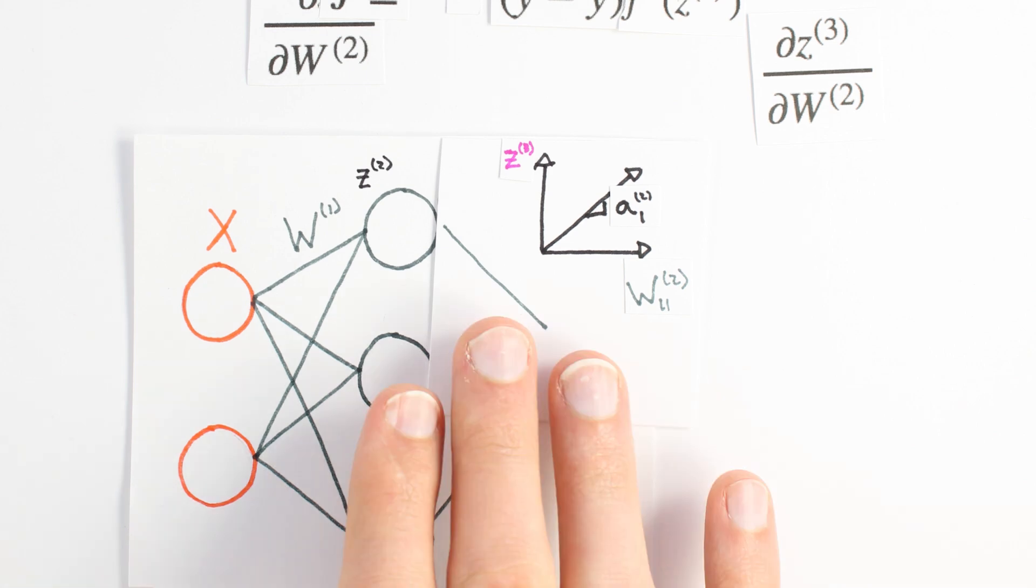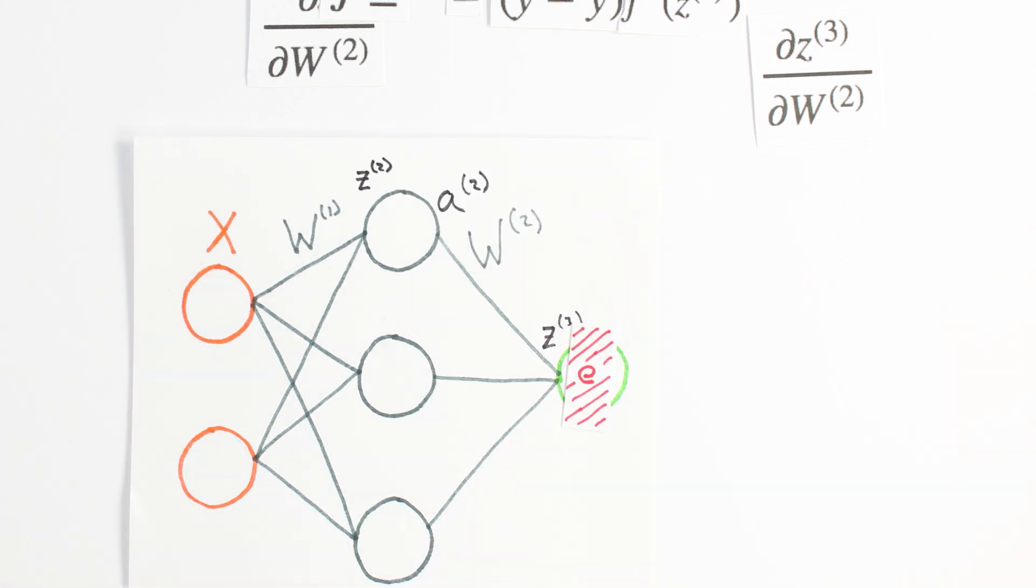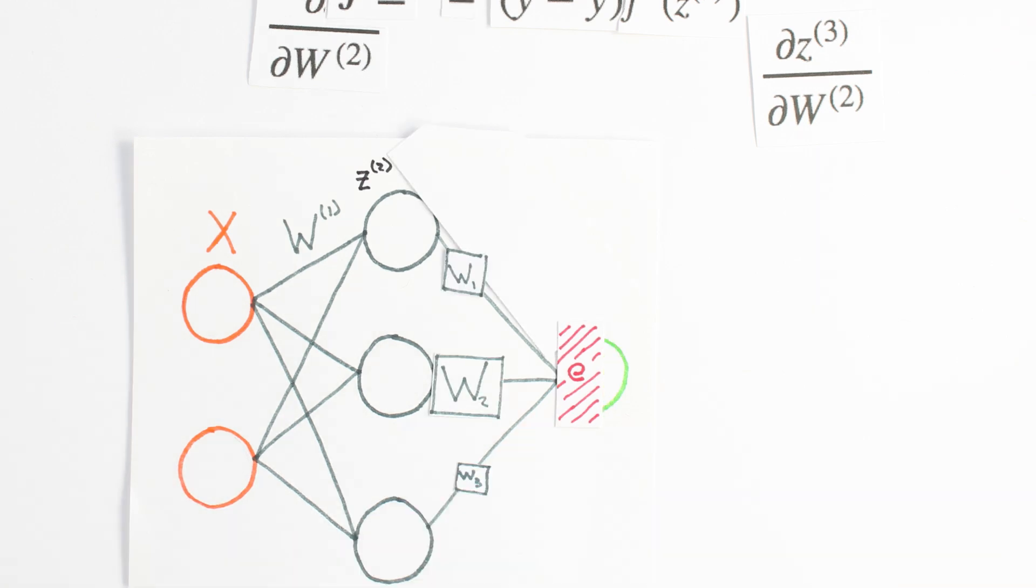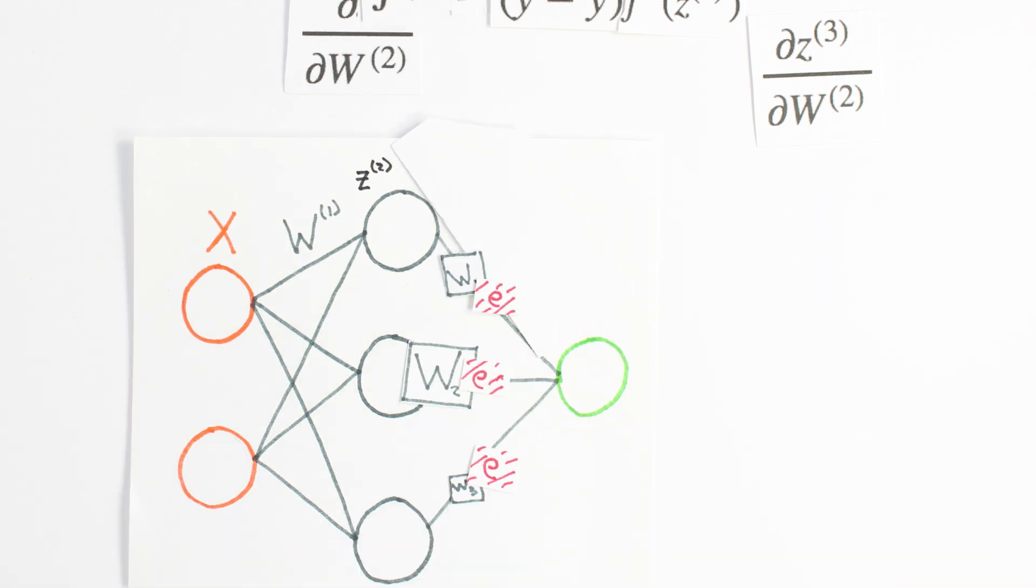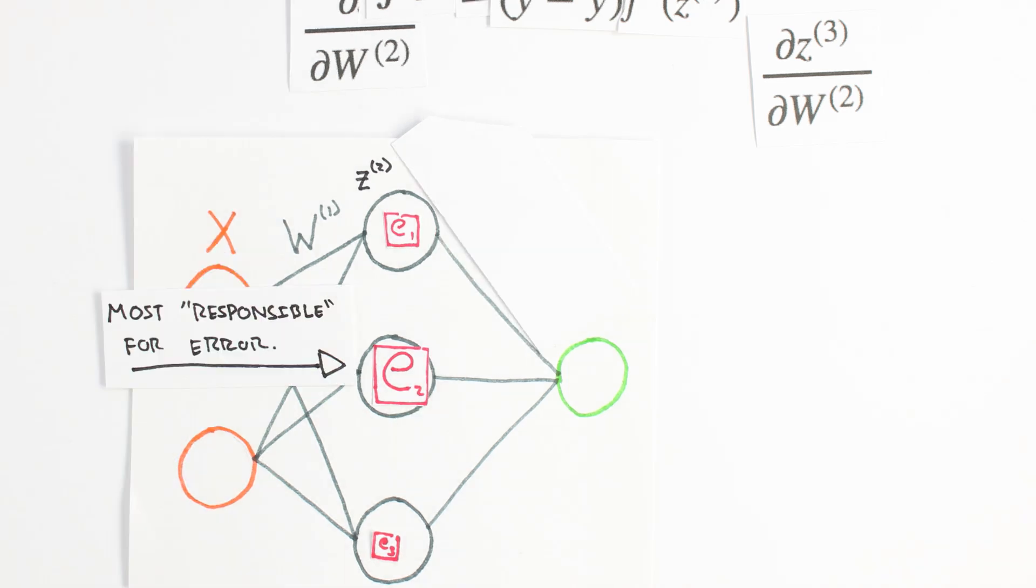Another way to think about what the calculus is doing here is that it is back-propagating the error to each weight. By multiplying by the activity on each synapse, the weights that contribute more to the overall error will have larger activations, yield larger djdw2 values, and will be changed more when we perform gradient descent.